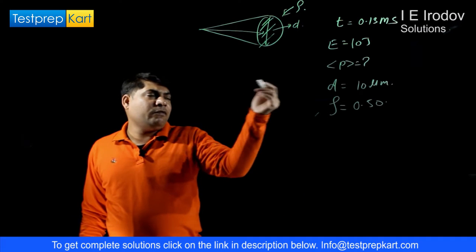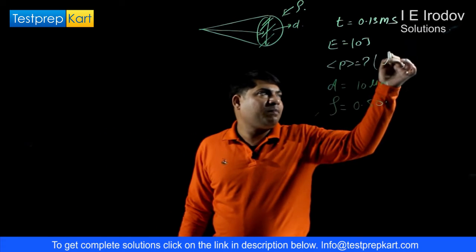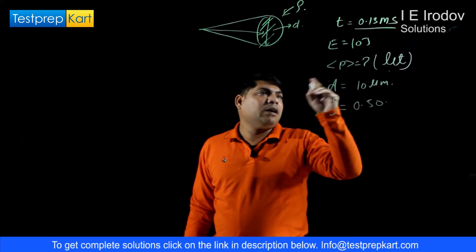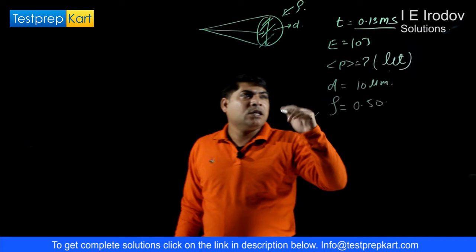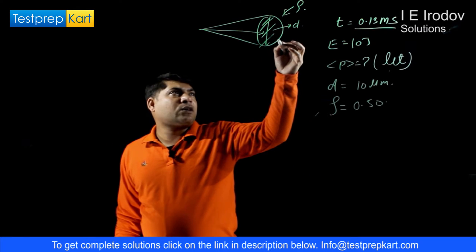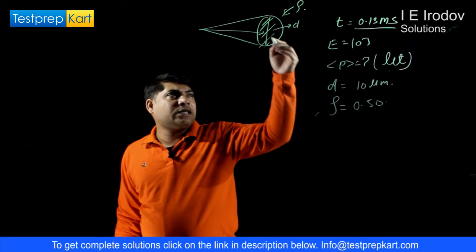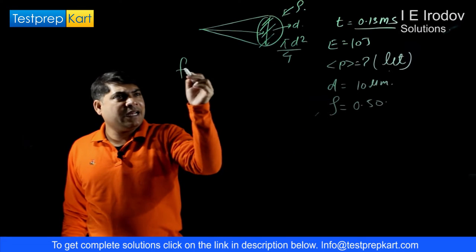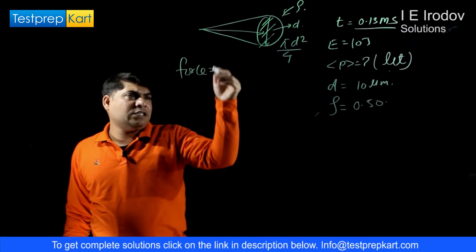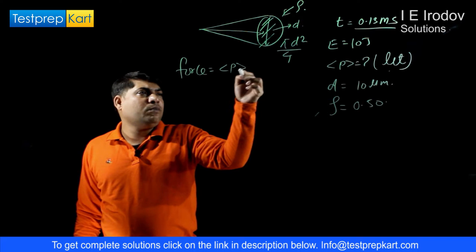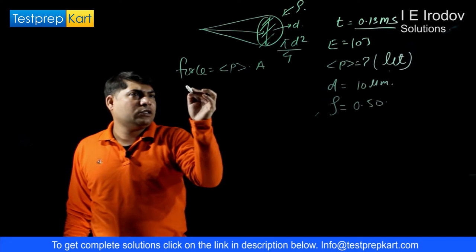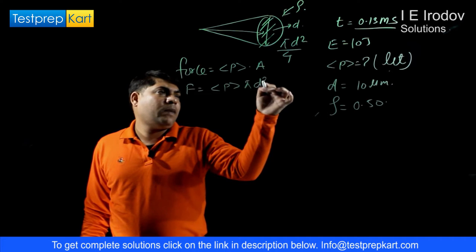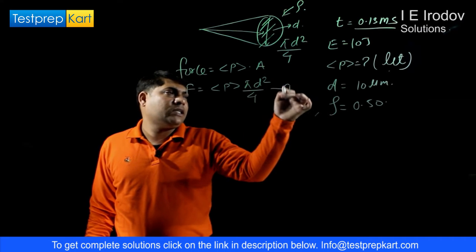If we assume that mean pressure due to this laser light for this duration is delta p, then area of this cross section formed by this laser beam would be pi d square over 4. So we can calculate force applied by this beam equals mean pressure into area. So force equals mean pressure into pi d square by 4. This is first equation.